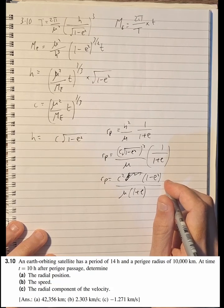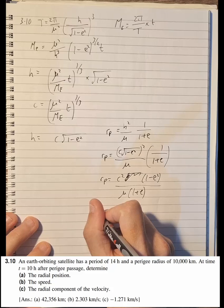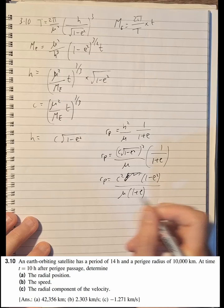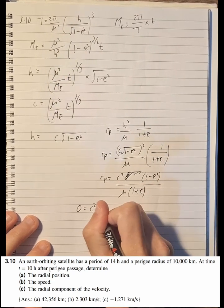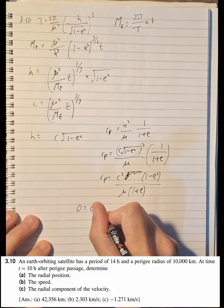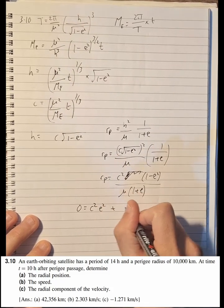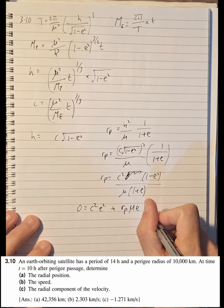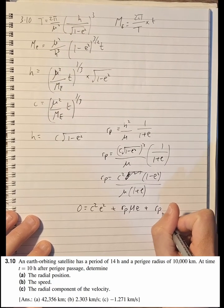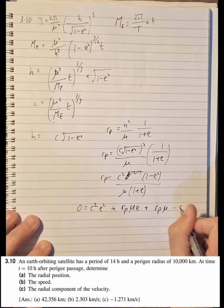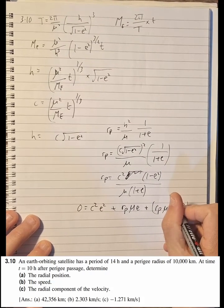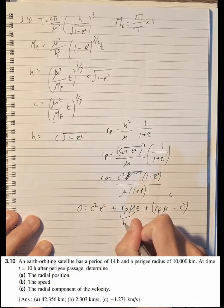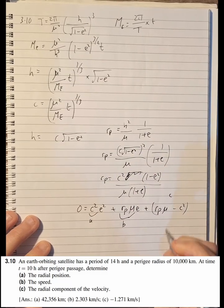We're going to make everything equal to zero, and this is going to get a little bit hairy, but basically we end up with: 0 = c²(1+e²) + r_p×μ×e + r_p×μ - c². Now that is our c value, this here is our b value, and this is our a value for the quadratic equation.